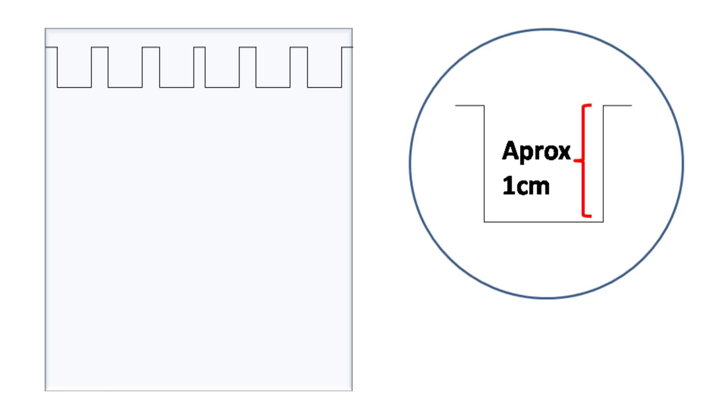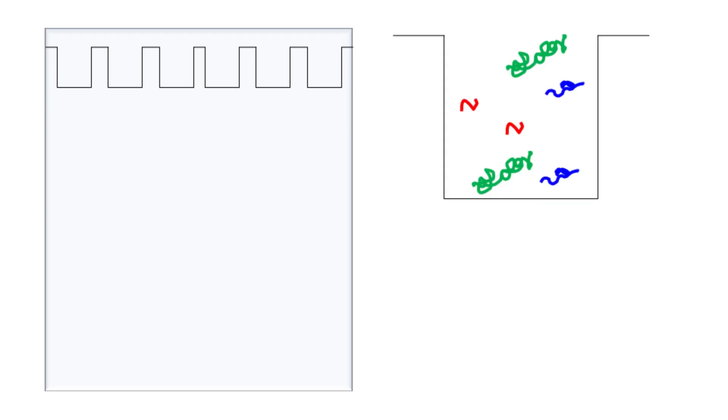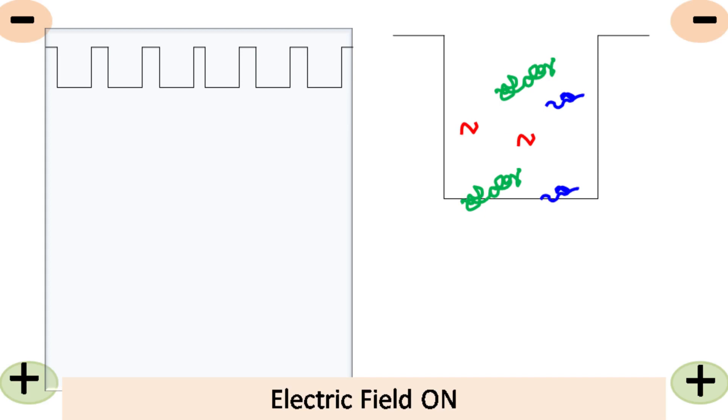The wells of the PAGE gel are approximately one centimeter deep. So when proteins are loaded in the gel, not all proteins reach the bottom of the well at the same time. So when we switch on the electric field, the proteins enter the gel at different times. And this problem can give bad resolution.